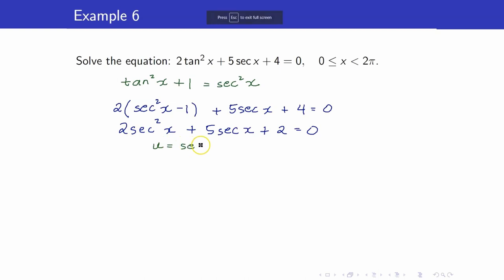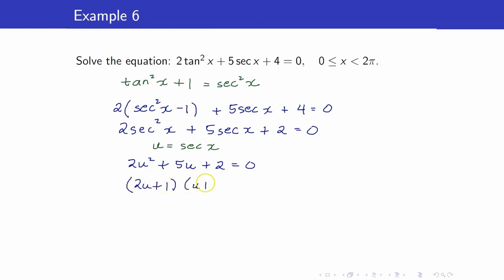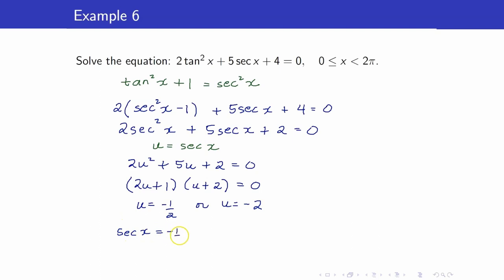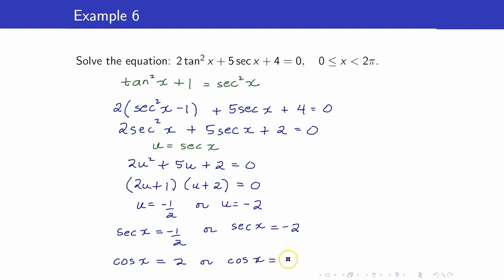Simplifying, we get 2 secant squared x plus 5 secant x plus 2. We now have an equation quadratic in form. We take u to be secant x, giving us 2u squared plus 5u plus 2 equals 0. This factorizes as 2u plus 1 times u plus 2 equals 0. Therefore, u equals negative 1 half or u equals negative 2. Switching back to x, since u is secant x, we have secant x equals negative 1 half or secant x equals negative 2. Writing this in terms of cosine, we get cosine x equals 2 or cosine x equals negative 1 half.